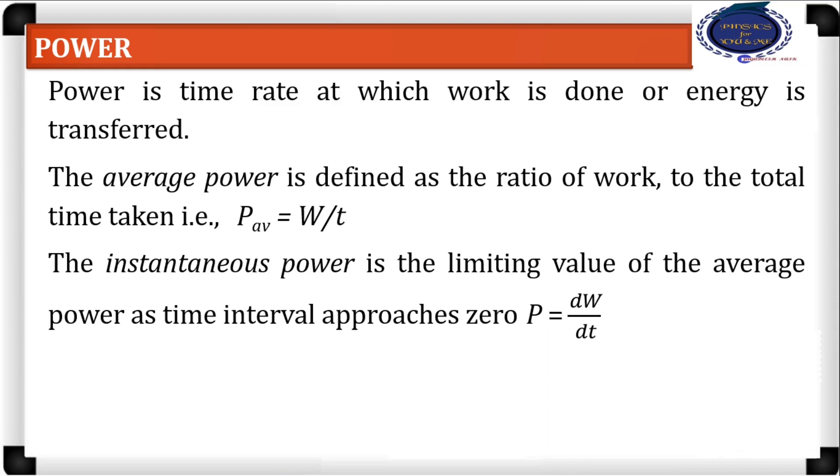The instantaneous power is the limiting value of the average power as time interval approaches zero. The instantaneous power is given as dW by dt. If you use the expression for work done as force dot displacement, the power will be given by F dot dr by dt, where dr by dt is the instantaneous velocity. Hence, instantaneous power is also given by the dot product of force and velocity.